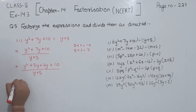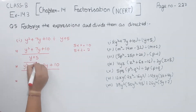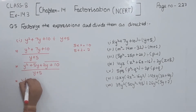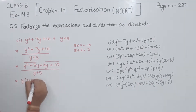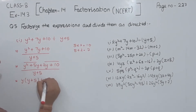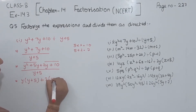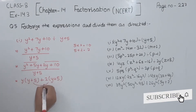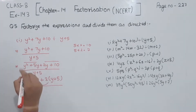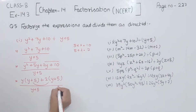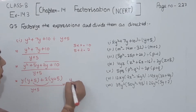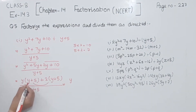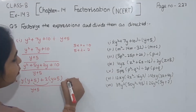Here we are having y plus 5. Now I am going to take common from the first two terms then the last two. Here y is the common, so inside the bracket we will have y plus 5. Now here we will take 2 as the common, so we will have y plus 5. Now this factor is the same, so I am going to write this one only one time. This is the one factor and the second factor is y plus 2.